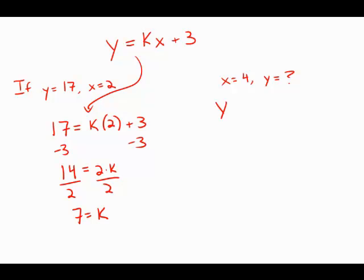So I'm going to go back to this equation, and now plug in 7 for k, plug in 4 for the value of x. And this is 28 plus 3, which is 31, and this is answer choice b.